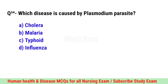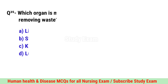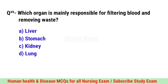Question No. 34. Which disease is caused by plasmodium parasite? Correct option is B. Malaria.